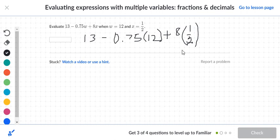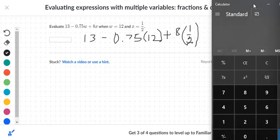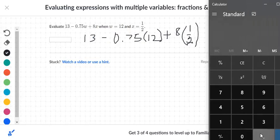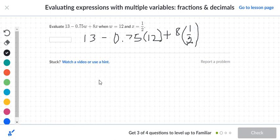We're going to go ahead and take care of the 0.75 and multiply that by 12. Let's bring up our calculator. 0.75 times 12, that actually turns out to be 9. So we're going to say 13 minus 9.